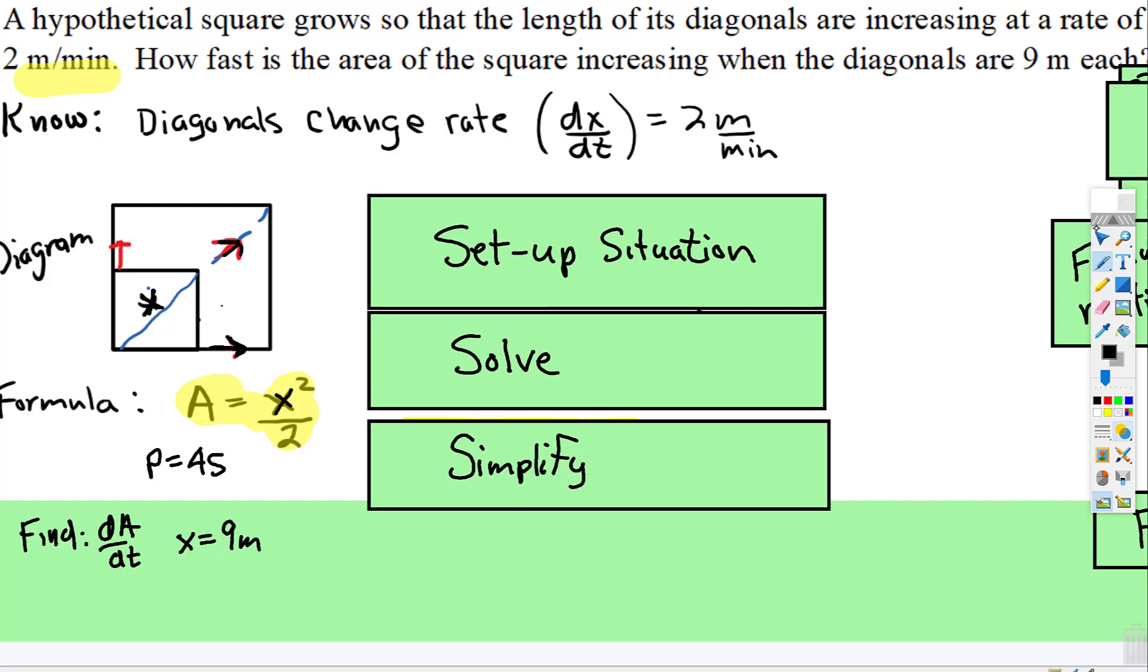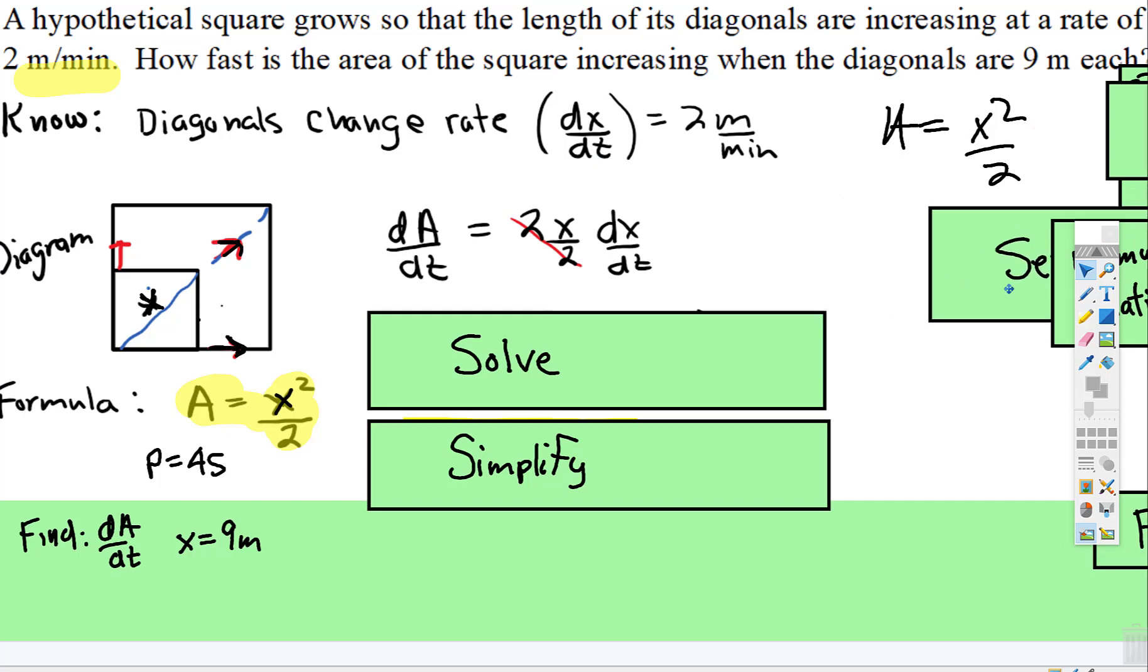So the original setup would be area is equal to x squared over 2. When you take the derivative, remember we're using implicit differentiation, so this would be dA/dt. When you take the derivative of that, you tack on dx/dt.